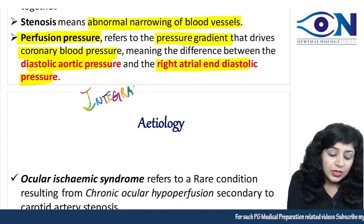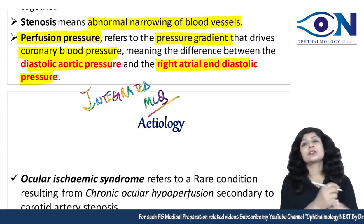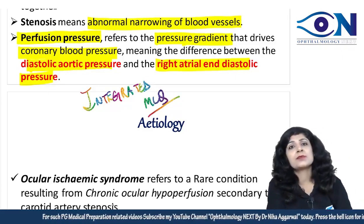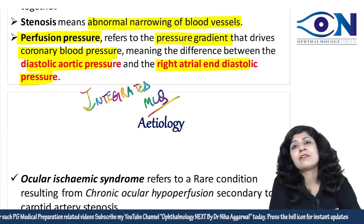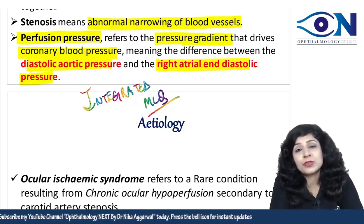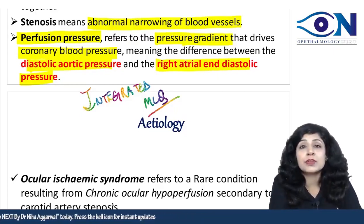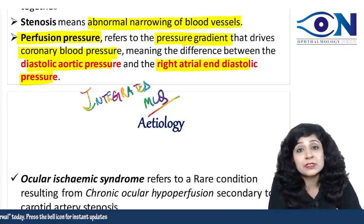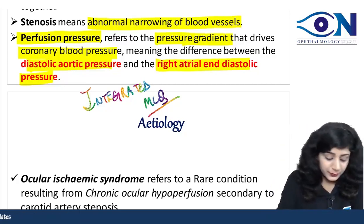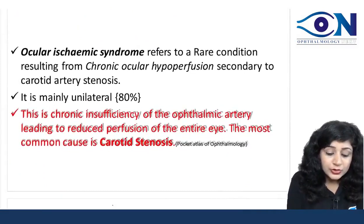You can get an integrated MCQ on ocular ischemic syndrome — they may start with a medicine problem involving low perfusion pressure and end up asking an ophthalmology question, or start with ocular symptoms and ask for the systemic cause. Now let's look at the etiology.